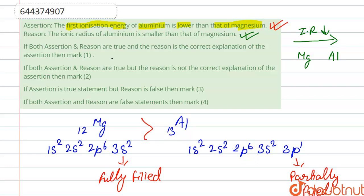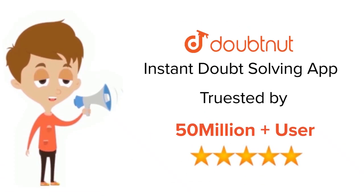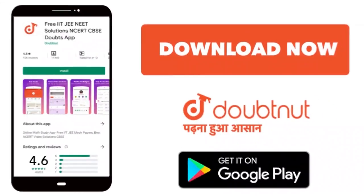But here it is not a correct explanation of assertion. So our correct option is option B, that is if both assertion and reason are true but the reason is not a correct explanation of assertion. Thank you. For class 6 to 12th, IIT and NEET level, trusted by more than 5 crore students, download Doubtnet app today.